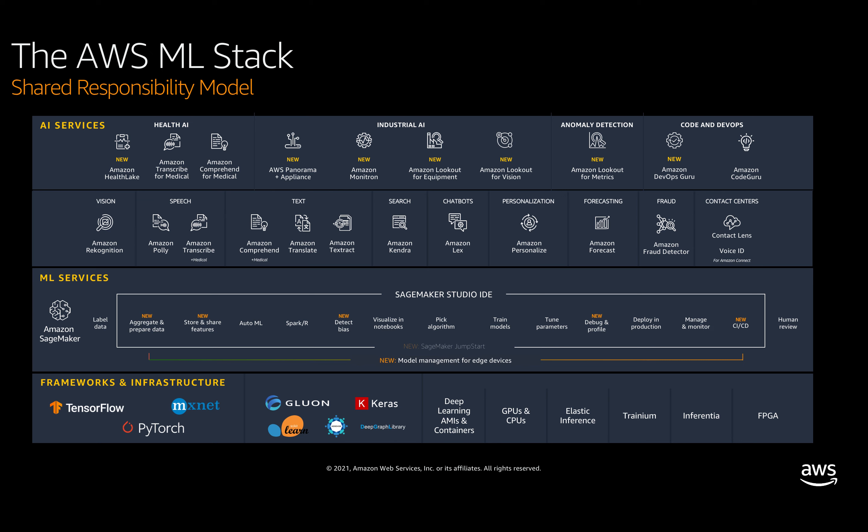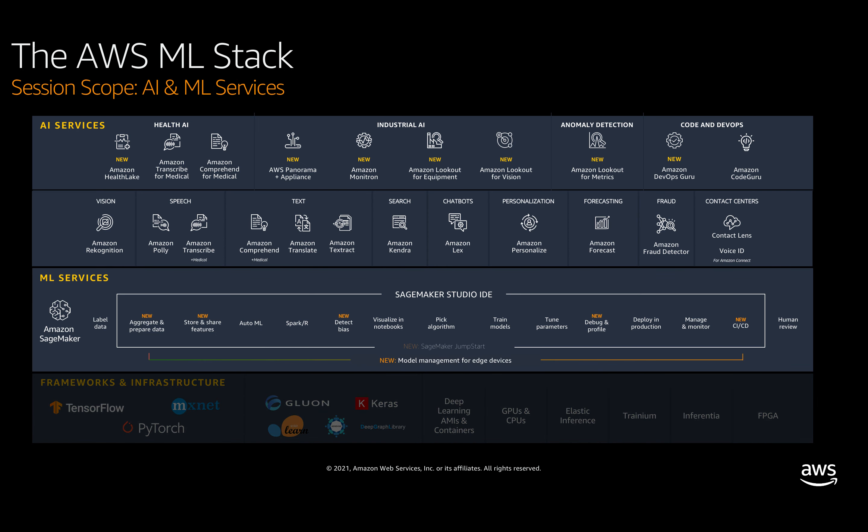Service selection determines the amount of configuration a customer must perform as part of their security responsibility. As an example, at the frameworks and infrastructure layer, if a customer is hosting machine learning workloads on EC2, the customer is responsible for patching the operating system on those servers. However, as you move up the stack to managed ML or AI services, those managed services typically take care of that OS-level patching. It would be difficult to cover this full stack in 30 minutes, so today we'll primarily focus on our ML services and AI services, with a bit more focus on the SageMaker layer.